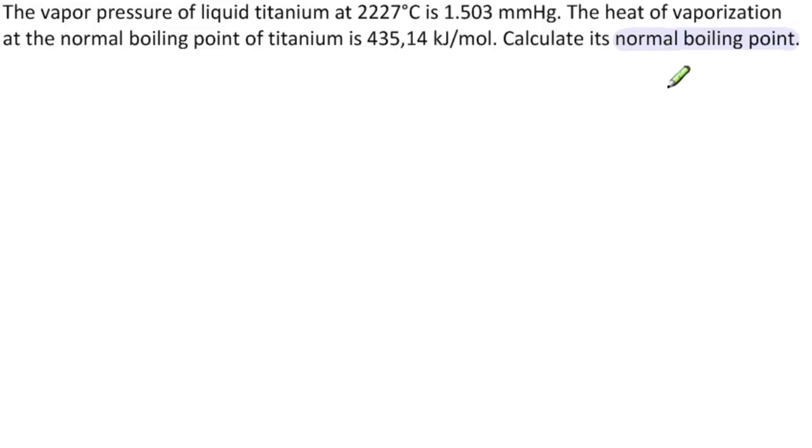Normal means at one atmosphere. So we're going to consider normal to be our level one. For level one information, we have P1 equals one atmosphere, and T1 is what we are looking for, the normal boiling point.